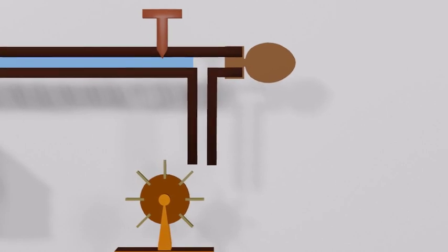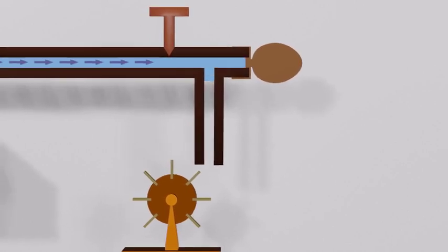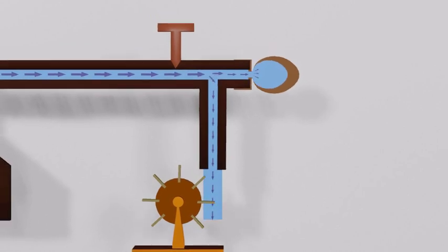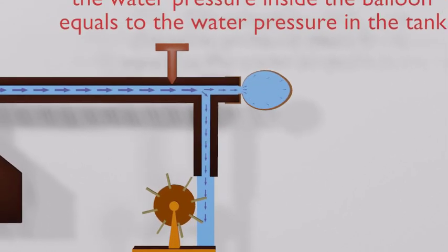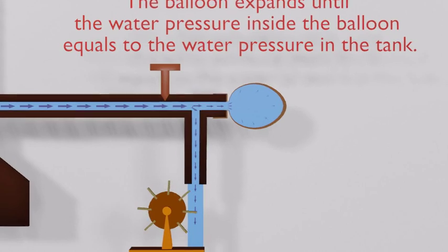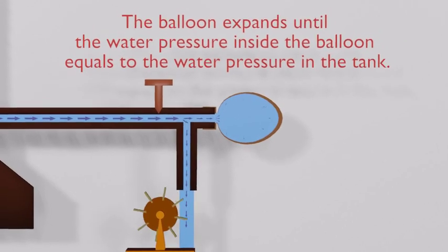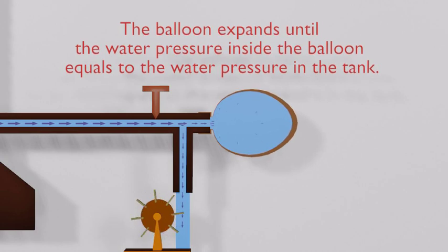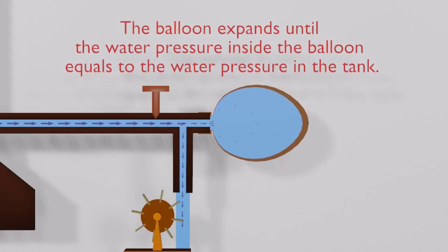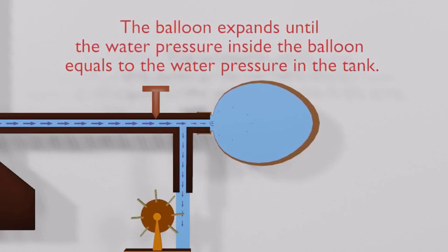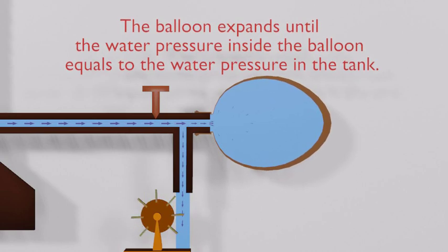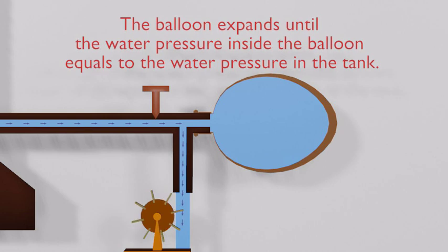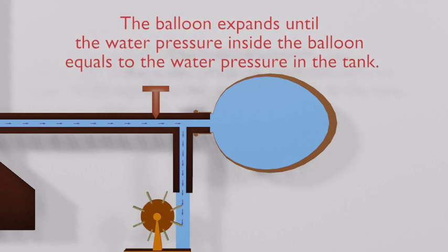When the valve is open, water starts to flow. The balloon expands until the water pressure inside the balloon is equal to the water pressure in the tank. Now the balloon is also a water storage, like a mini water tank.